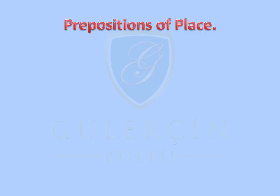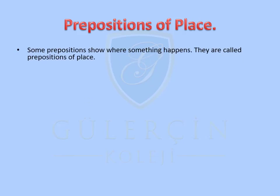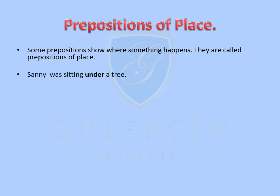Propositions of place: Some propositions show where something happens. They are called propositions of place. Let's see some examples. Sunny was sitting under a tree.